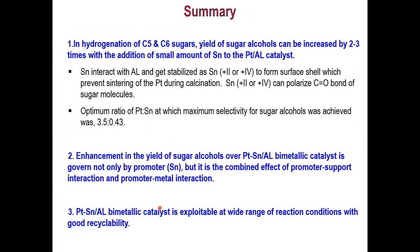In summary, if you have tin in your catalyst along with platinum, it stops sintering and also boosts the activity of the catalyst. The yield of sugar alcohol increases because of tin addition and prevention of platinum agglomeration. The enhancement in yield is governed by a combined effect of promoter and support interaction.